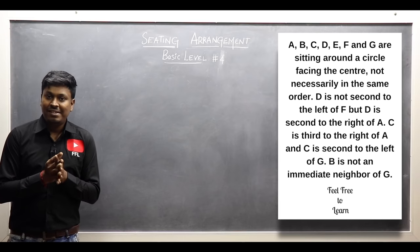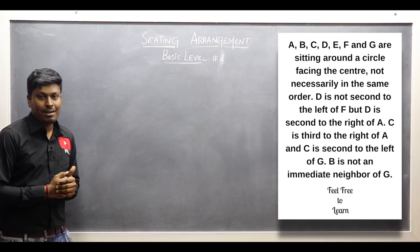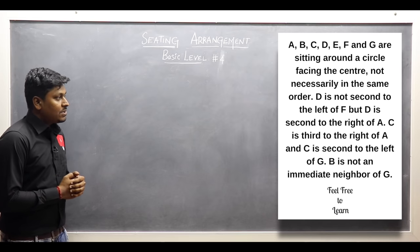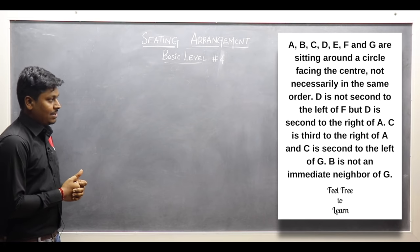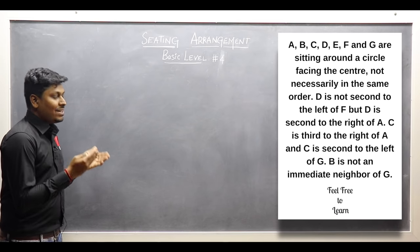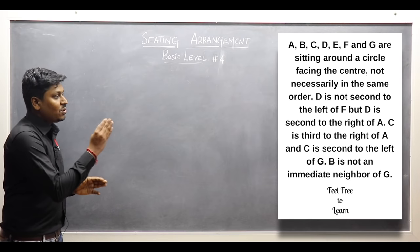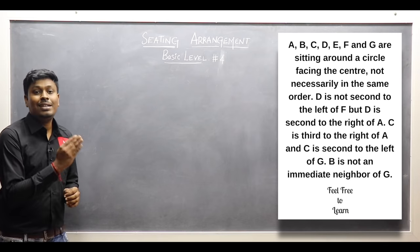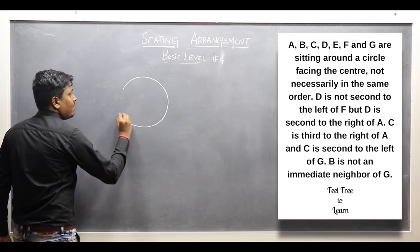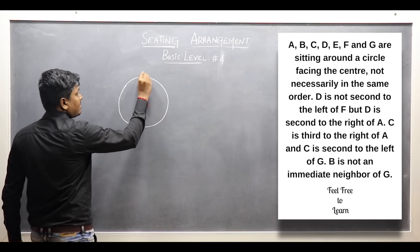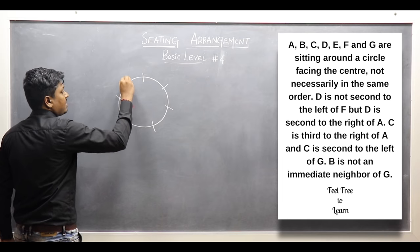Thanks for being here in my YouTube channel. Now let me move on to the basic level arrangement number four. A, B, C, D, E, F, and G are sitting around a circle, all of them facing the center, and they are not sitting necessarily in the same order. So totally there are seven persons sitting in a circle, all facing the center.